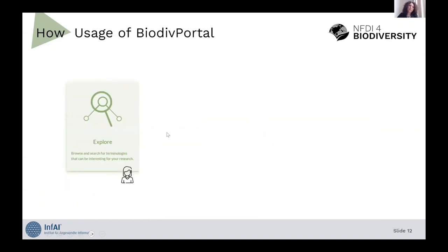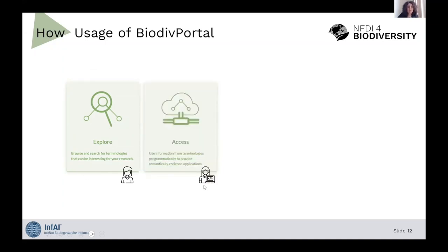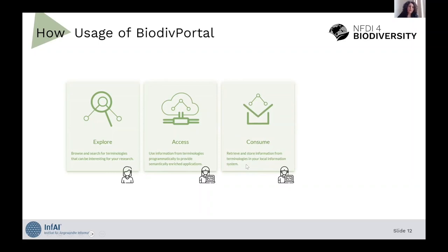How can we use Biodiv Portal? A user can browse and search for terminologies that can be interesting for research. Developers can also access the API programmatically to provide semantically enriched applications. Developers or users can retrieve and store terminologies in their own local systems. And finally, they can contribute with their own terminologies so that they can get access to all the provided services automatically.